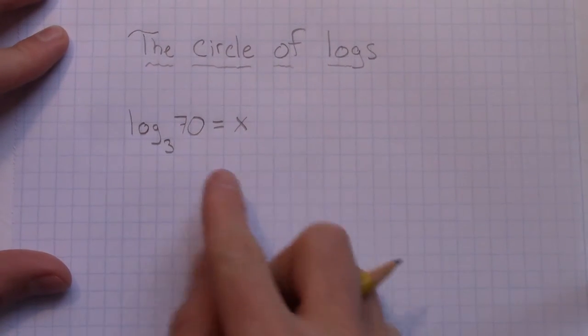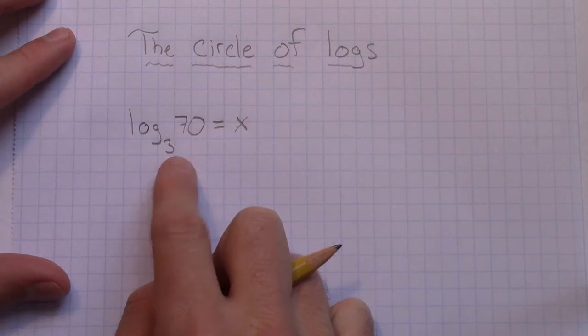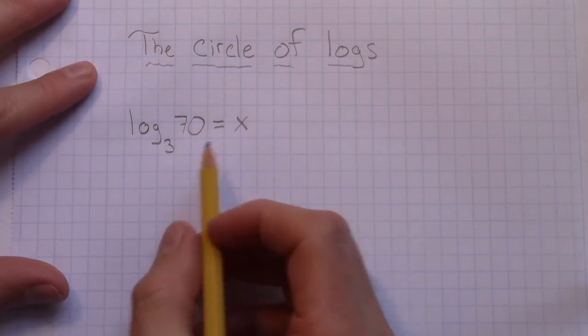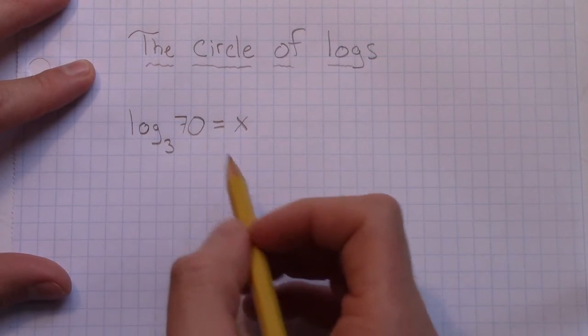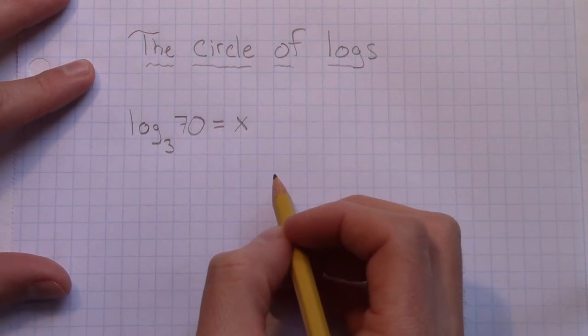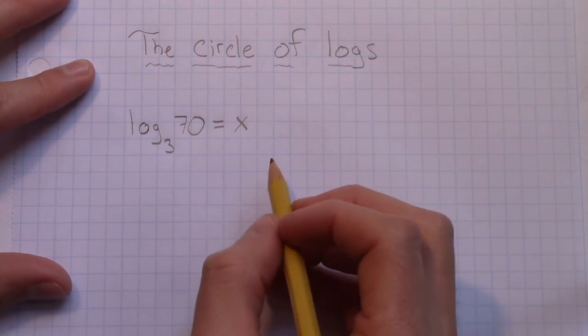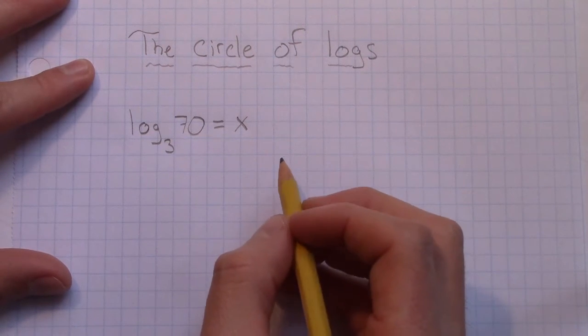We can talk about a lot of things with this. We could talk about the change of base formula to actually figure out what this is. But converting this into an exponential function is kind of difficult for some students, seeing what this actually is doing. And using the circle of logs, we can see that.